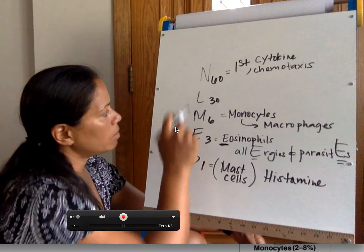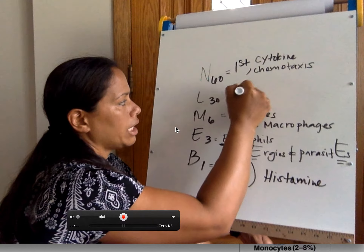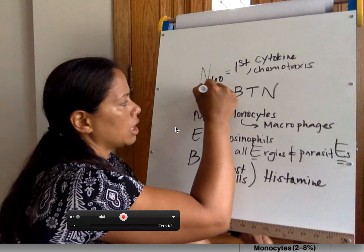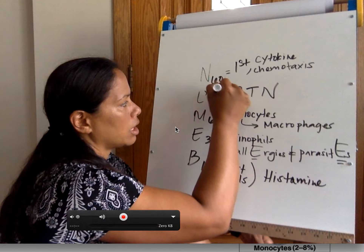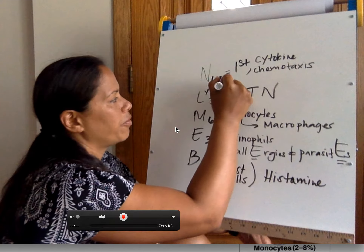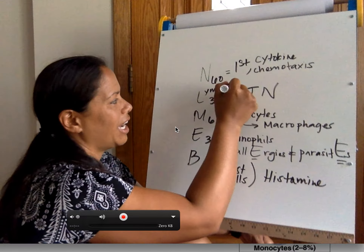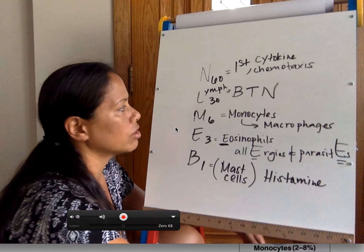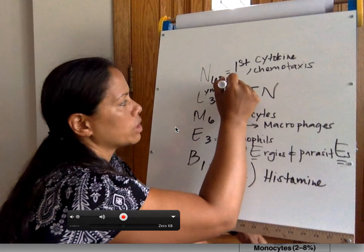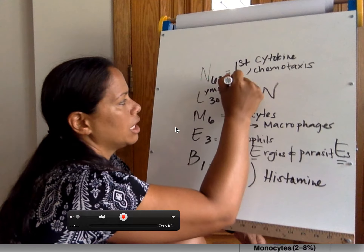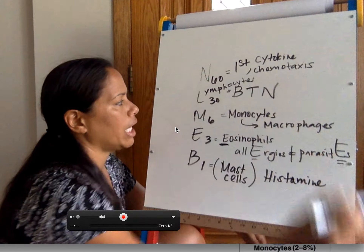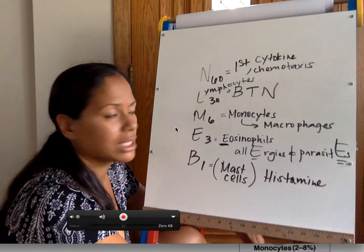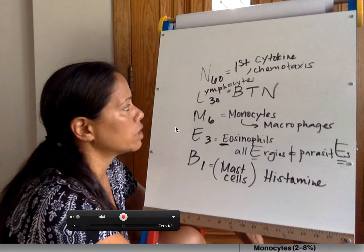Last one — if you forget this, you will be beaten. Lymphocytes: B cells, T cells, and natural killer cells are all part of your lymphocytes.